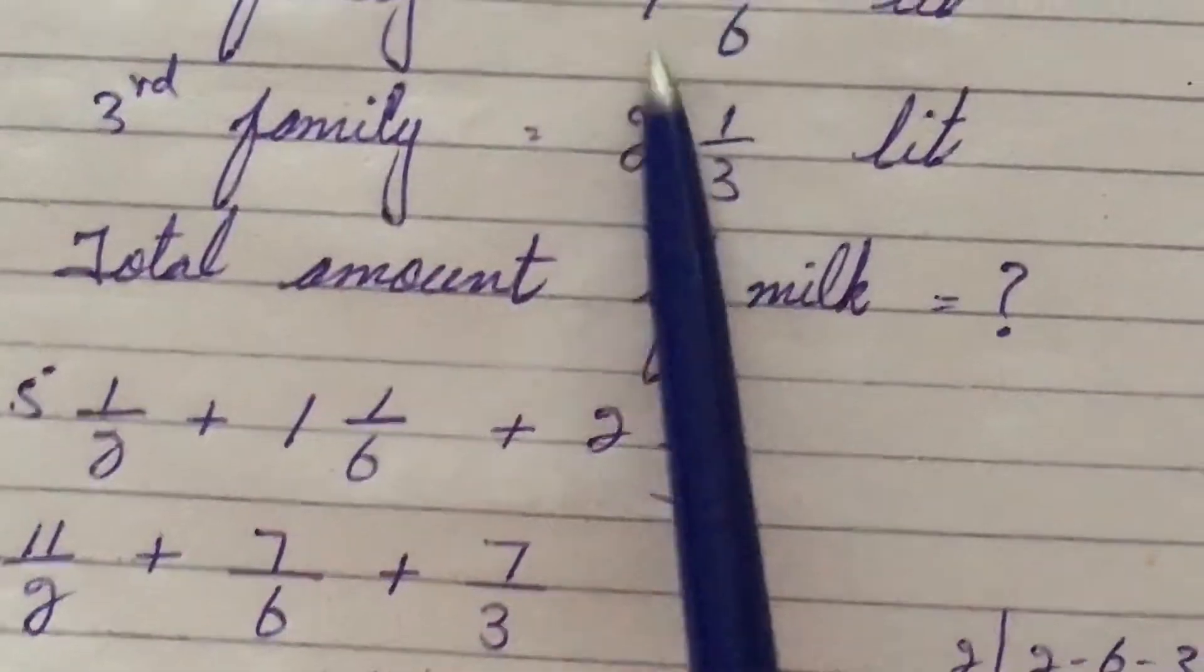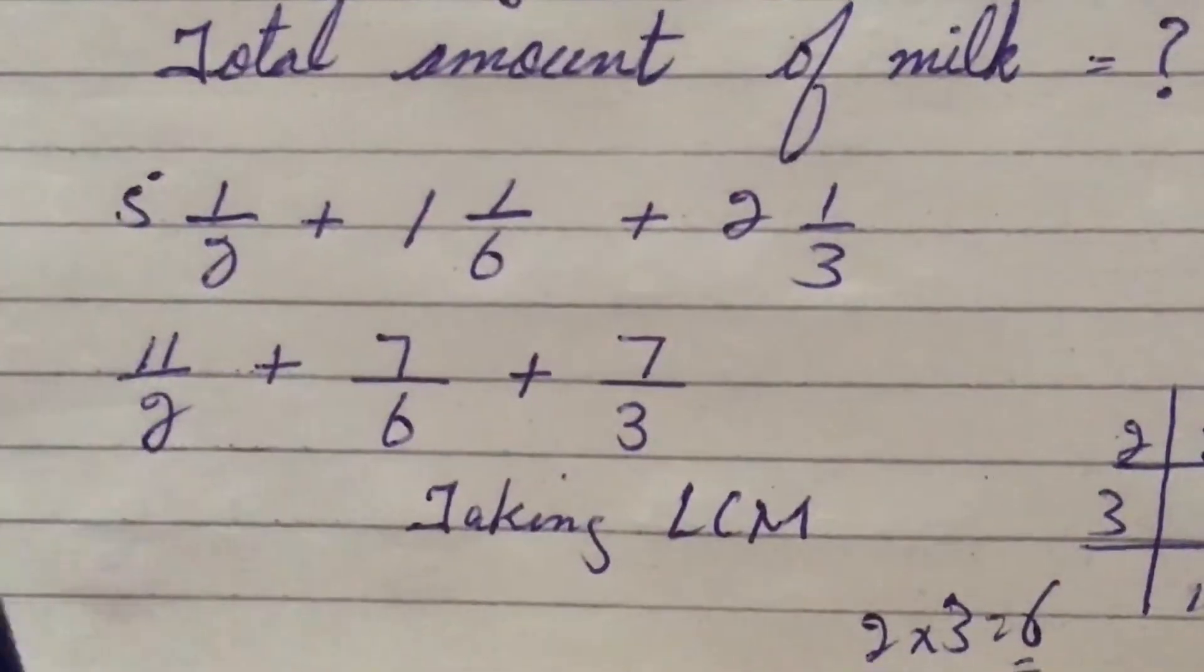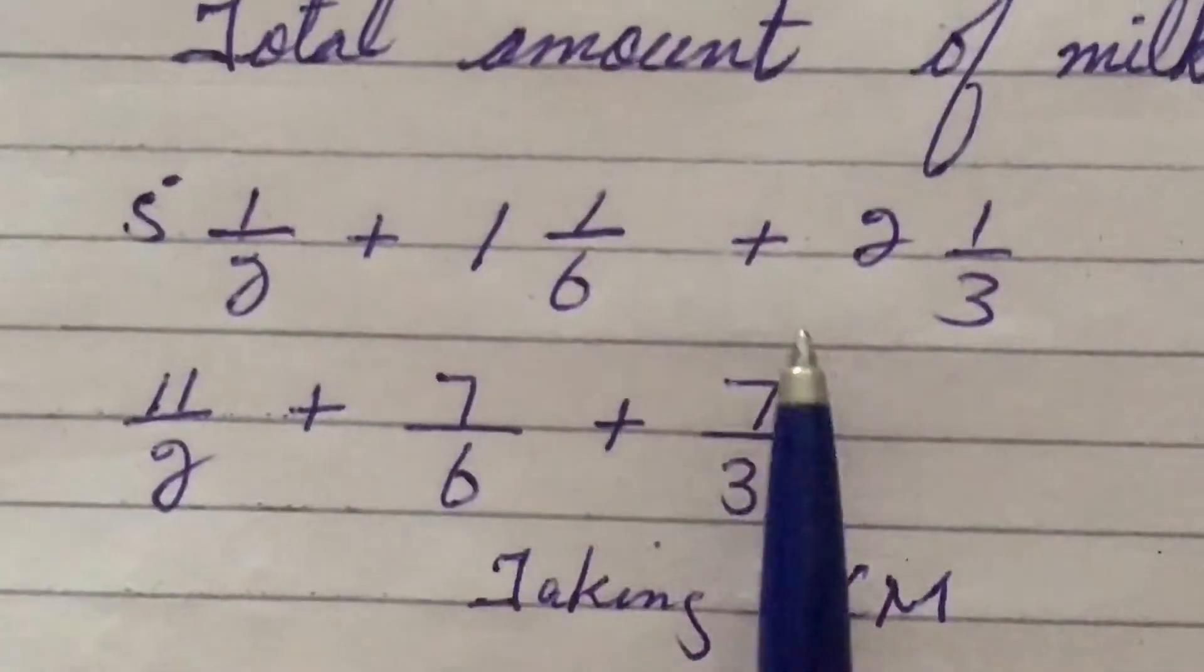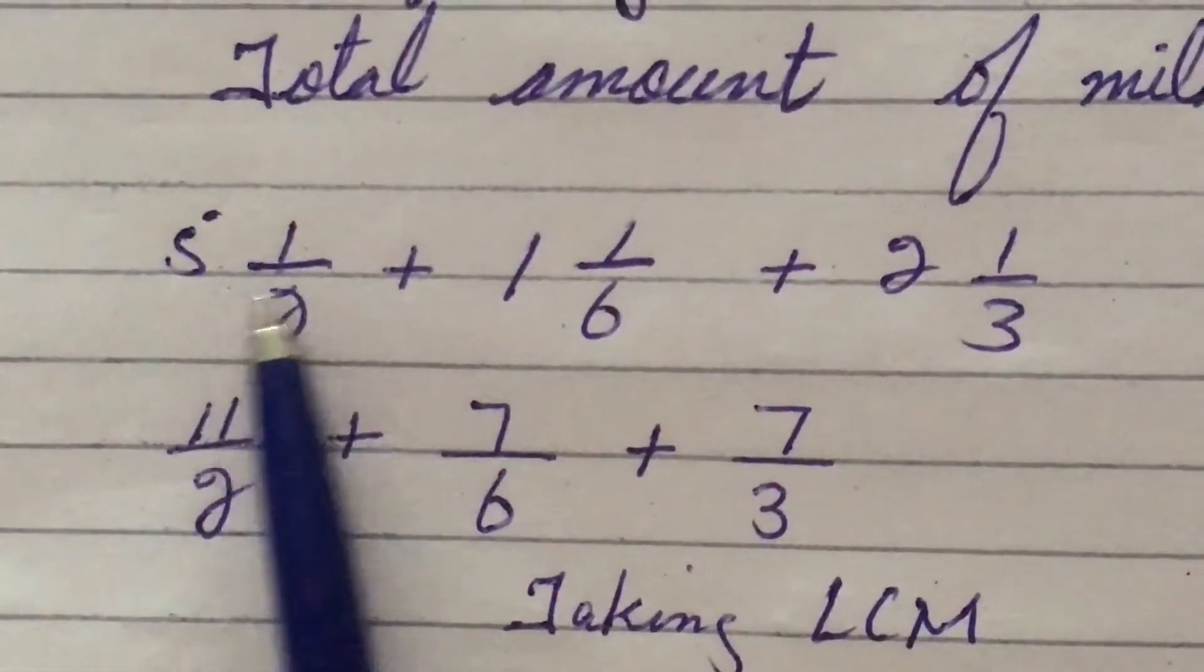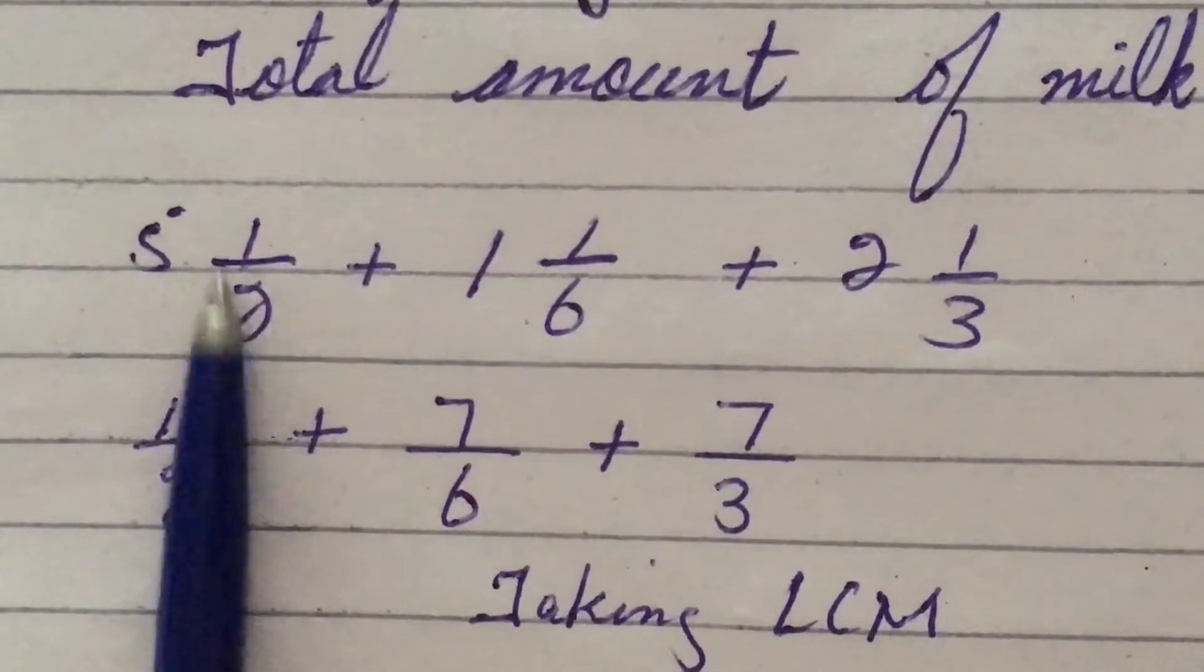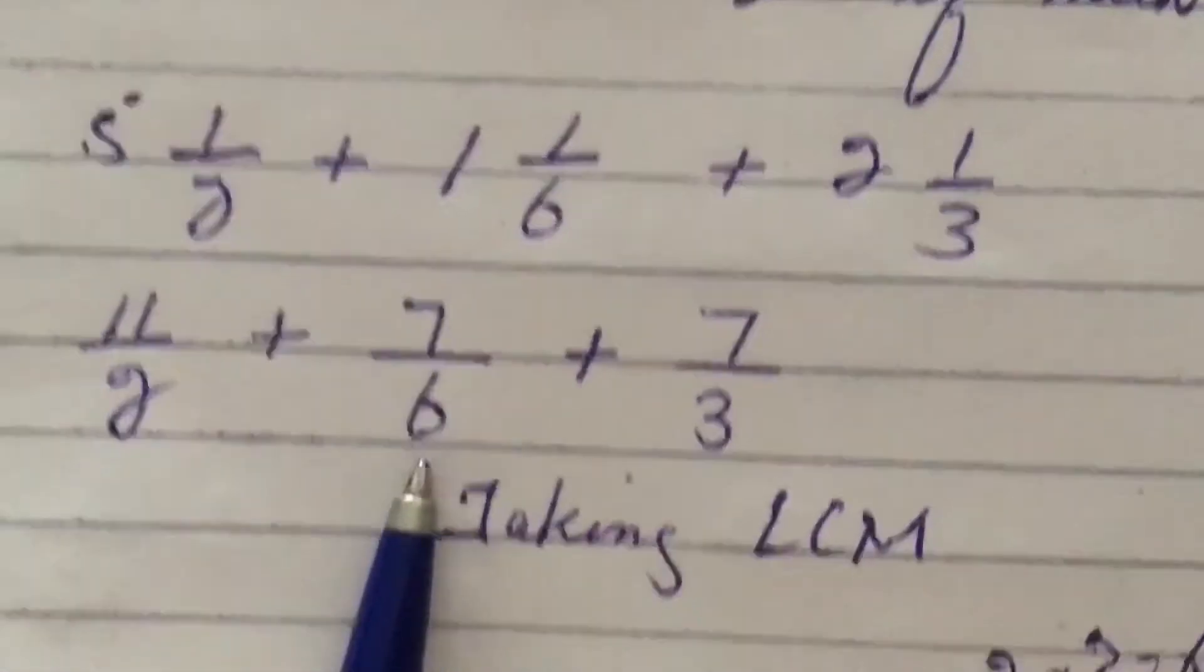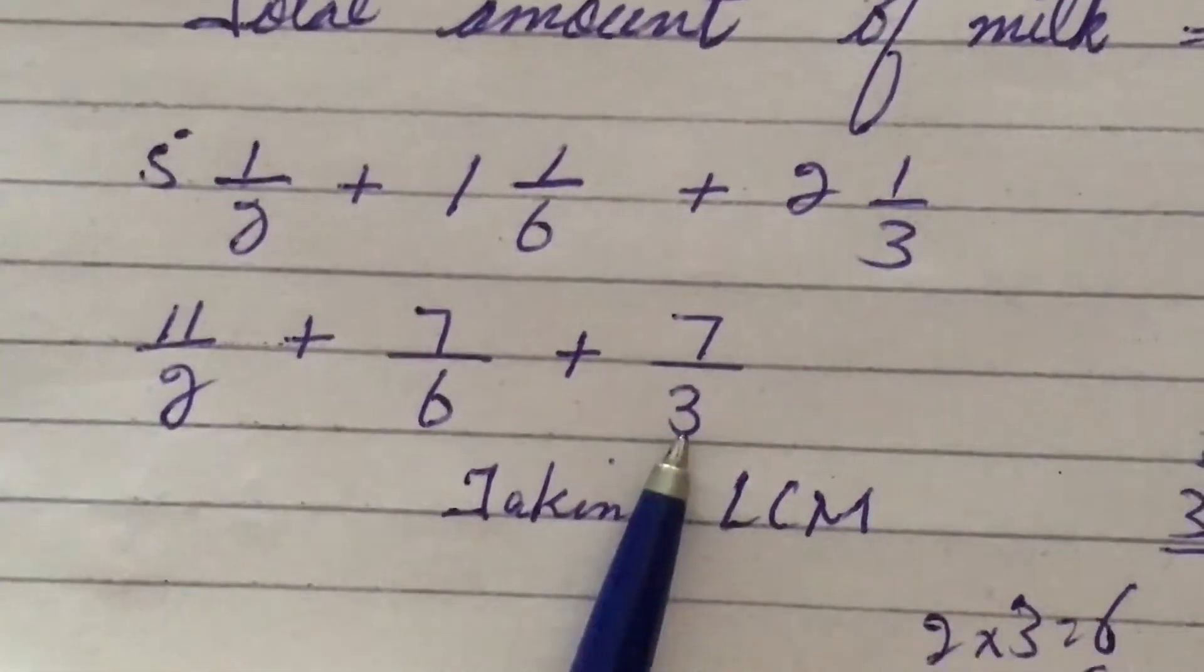We are going to do addition in this question. So 5 1/2 plus 1 1/6 plus 2 1/3. As I told you, first of all we have to convert this mixed fraction into proper fraction. So 5 times 2 are 10 plus 1 equals 11/2, plus 1 times 6 is 6 plus 1 equals 7/6, plus 2 times 3 are 6 plus 1 equals 7/3. So this is the proper fraction.